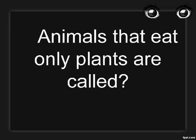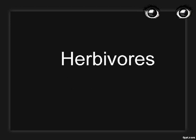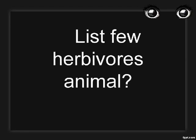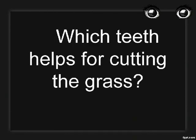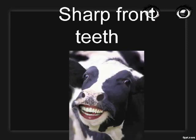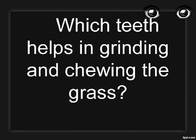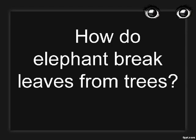Animals that eat only plants are called herbivores. List a few herbivores: cows, horse, goats, and deer. Which teeth help in cutting the grass? Sharp front teeth. Which teeth help in grinding and chewing the grass? Back teeth. How do elephants break leaves from trees? Using their trunk.